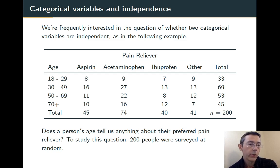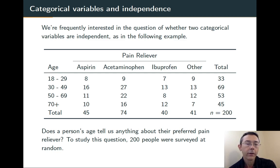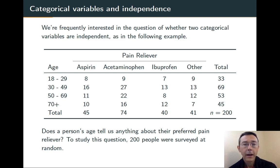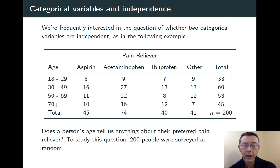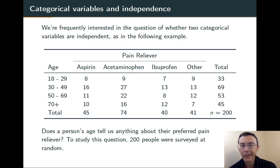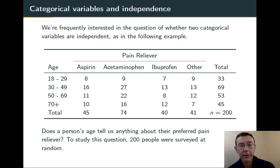We've got a categorical variable going left and right, another one going up and down, and in the individual cells we're going to have counts for the number of observations that fall into any particular combination of categories. On the right and bottom, I've added a column and a row of marginal totals — that is, the total for the entire row and the total for the entire column. We're interested in the question of whether or not the two variables are independent. In other words, does knowing the outcome for one of the variables tell you anything about the outcome for the other?